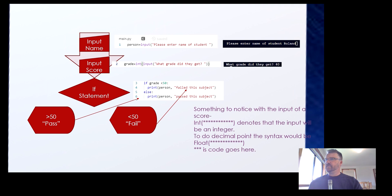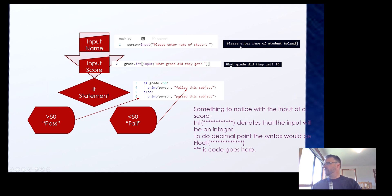Now, if I was to write in Python to input a name, I would give it some kind of variable name. For example: person equals input, which is manual input in this case, with open brackets and the prompt 'Please enter your name' in inverted commas, then close bracket. And this is what it looks like when you run it — it says please enter your name. I've entered my name, Roland.